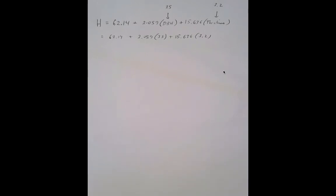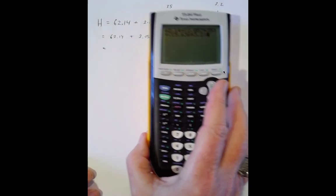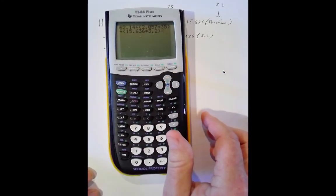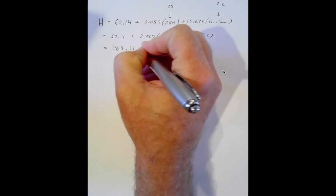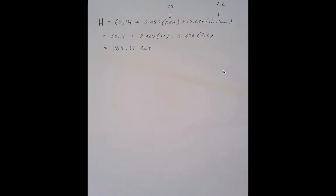All four calculators in my house had dead batteries, so last night we went through and replaced all the batteries. Anyway, when I put this in the calculator, we get a predicted tree height of 184.17.